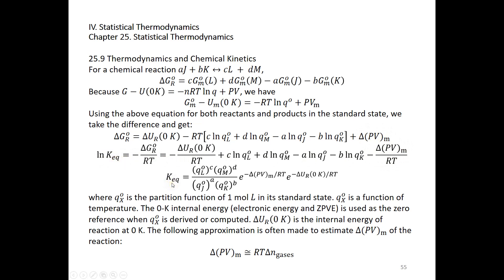The equilibrium constant K is proportional to the standard partition function of L to the power of C, and M to the power of D on top, with chemicals J and K as reactants appearing on the bottom to the powers A and B respectively. The coefficients A, B, C, and D are accounted for in this ratio of partition functions.